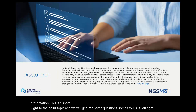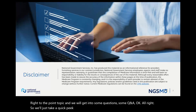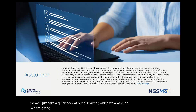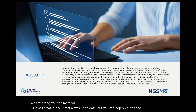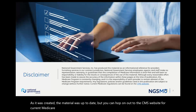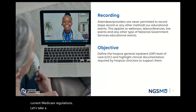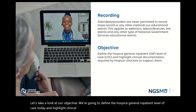So we'll just take a quick peek at our disclaimer, which we always do. We are giving you the material as it was created — the material was up to date — but you can hop on out to the CMS website for current Medicare regulations. Let's take a look at our objective. We're going to define the hospice general inpatient level of care today and highlight clinical documentation required by hospice physicians to support that GIP level of care.